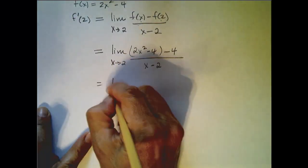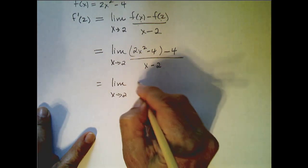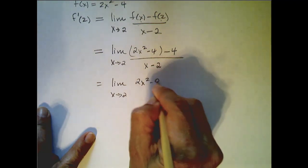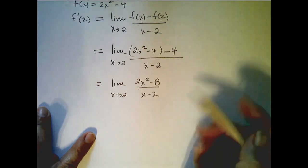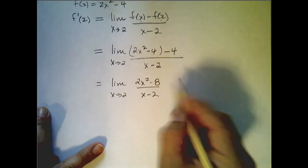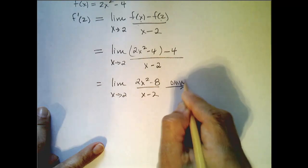This is equal to the limit as x goes to 2, of 2x squared minus 8, over x minus 2. If I were to try direct substitution, I would get 0 over 0, which tells me, do more work.